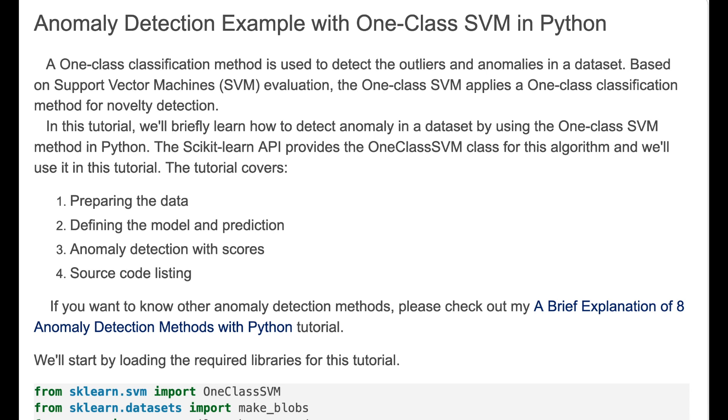In this tutorial we'll briefly learn how to detect anomaly in a dataset by using One-Class SVM method in Python. The scikit-learn API provides the OneClassSVM class for this algorithm and we'll use it in this tutorial.